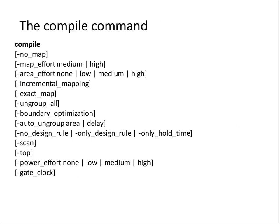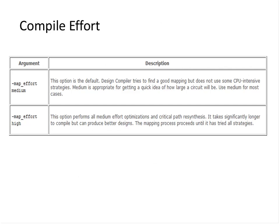Now let us look at the compile command. The compile command has many options. I would recommend that you go to the DC shell and read the man page. I will discuss the most important options. One is the map effort - this is called the compile effort. The default option is medium: Design Compiler will find a good mapping but will not use some of the paper-and-pencil strategies. Medium is appropriate for getting a quick idea of your area and timing and should be used for most cases.